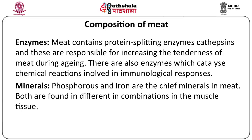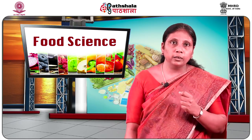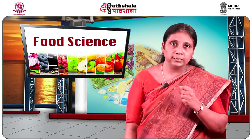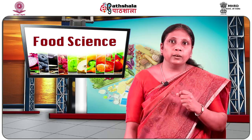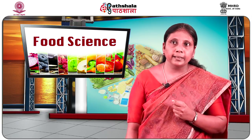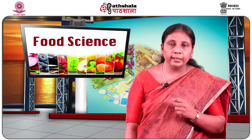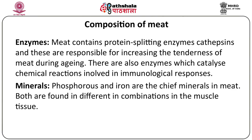Enzymes are also present in meat. There are specific protein-splitting enzymes called cathepsins found in meat. These proteolytic enzymes contribute to the tenderness in meat when the meat is aged after rigor mortis has set in. Aging or ripening of meat contributes to tenderness through the action of these protein-splitting enzymes. There are also enzymes which catalyze chemical reactions involved in immunological responses found in the meat. Minerals like phosphorus and iron are the chief minerals found in the muscles, present in different combinations in the muscle tissue.